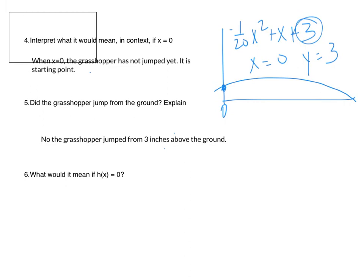The next question: what would it mean if h of x equals 0? Remember h of x is the y value, so that's when the path hits the x-axis again. Since the x-axis represents the ground, when h of x equals 0, the grasshopper has landed. He landed — and because he didn't start on the ground, this is where he touches down.